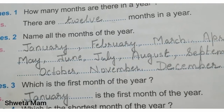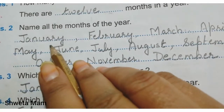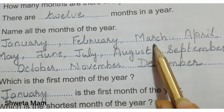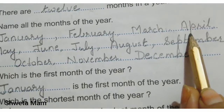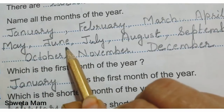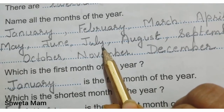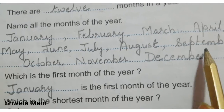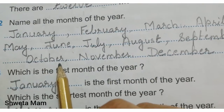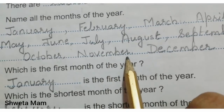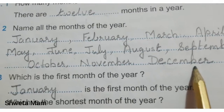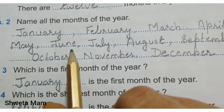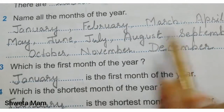Next question: Name all the months of the year. January, J-A-N-U-A-R-Y. February, F-E-B-R-U-A-R-Y. March, M-A-R-C-H. April, A-P-R-I-L. May, M-A-Y. June, J-U-N-E. July, J-U-L-Y. August, A-U-G-U-S-T. September, October, November, and December. Name all the months of the year: January, February, March, April, May, June, July, August, September, October, November and December.